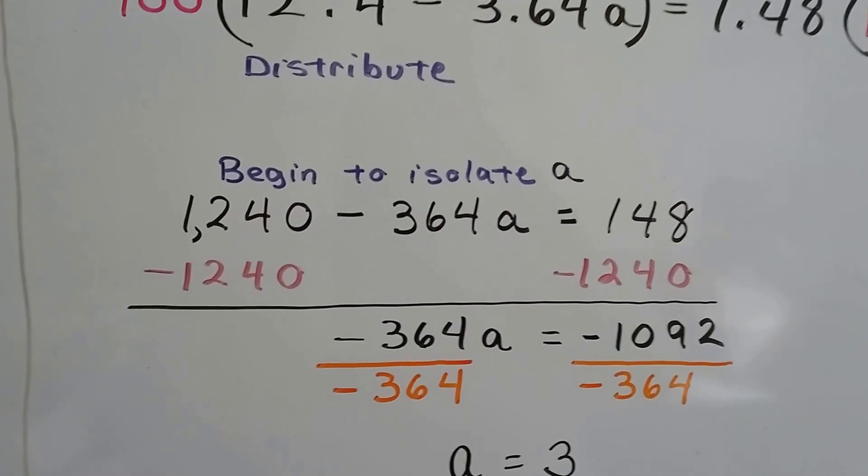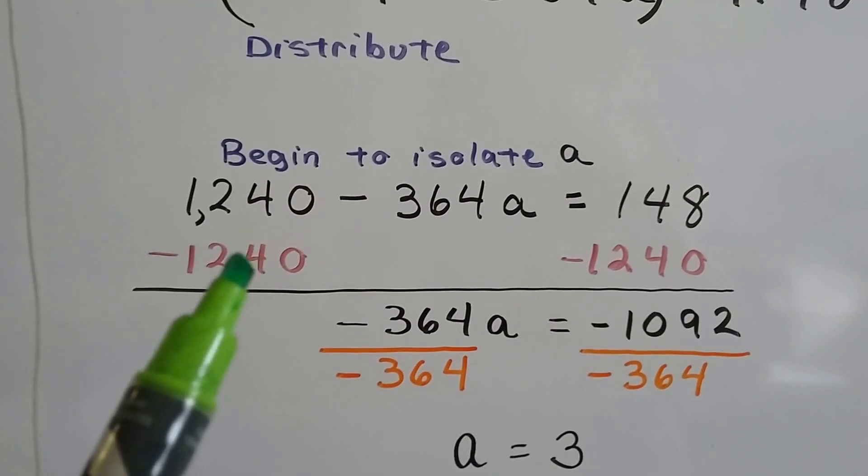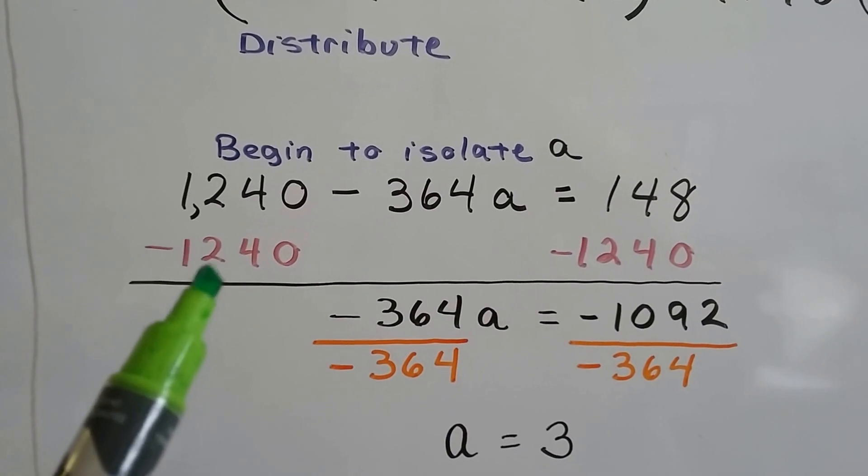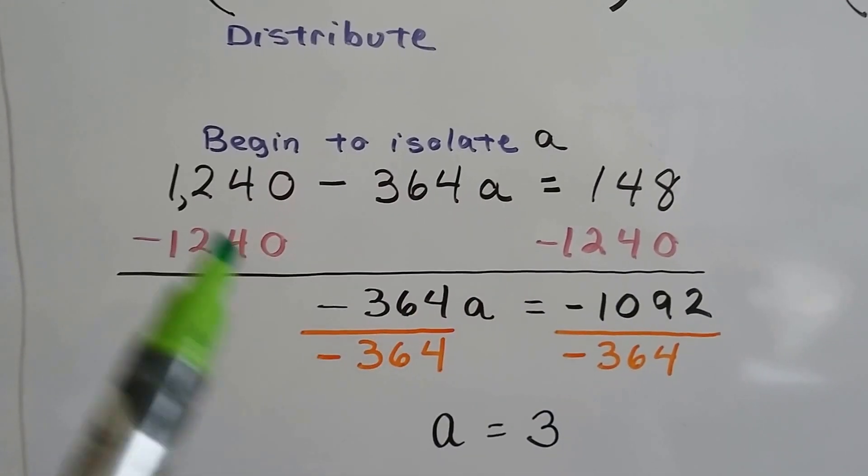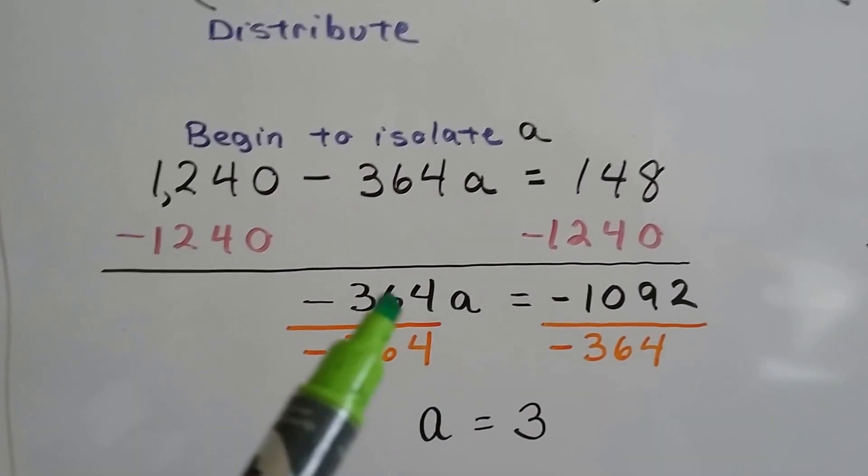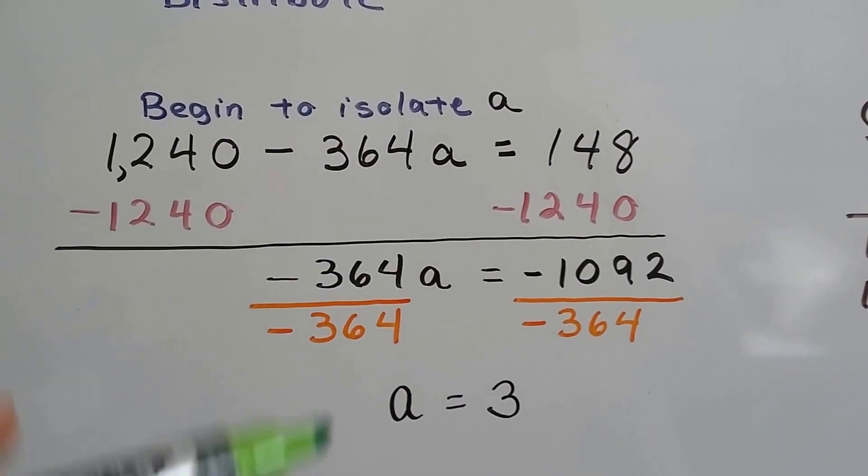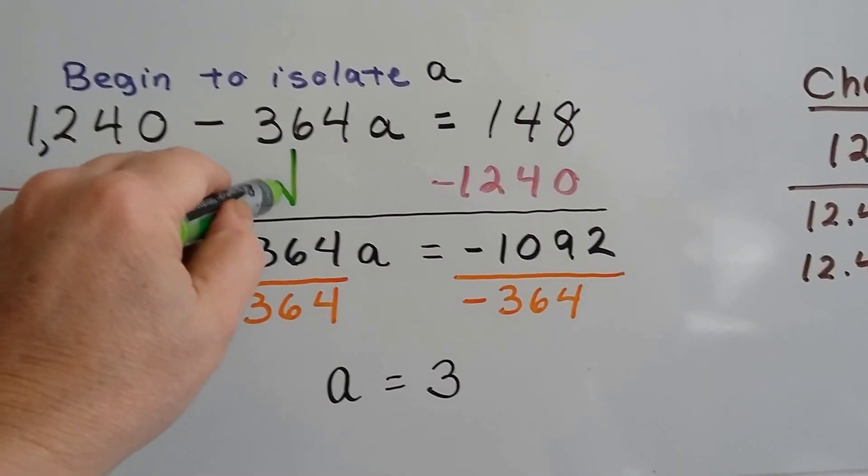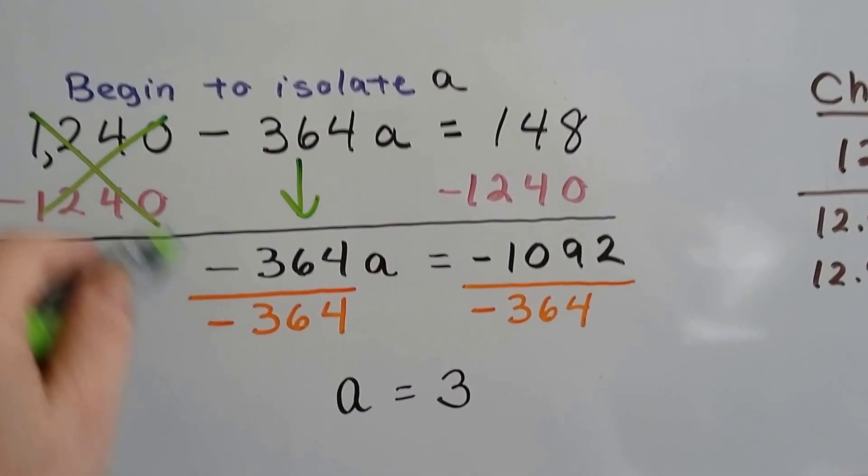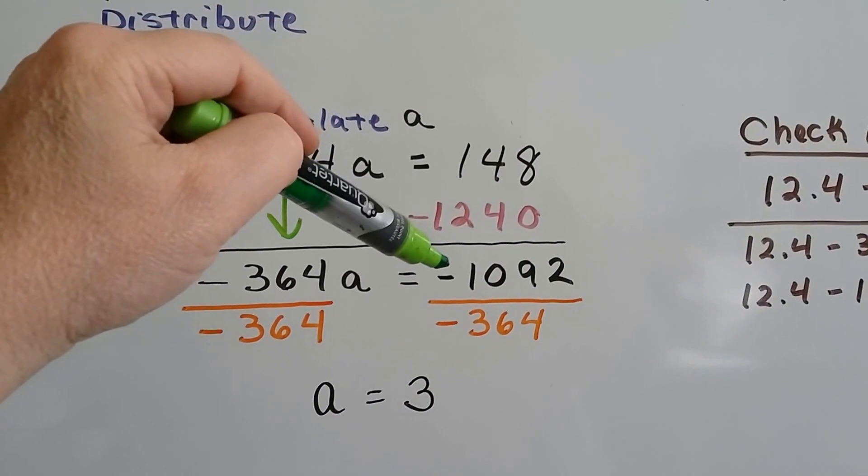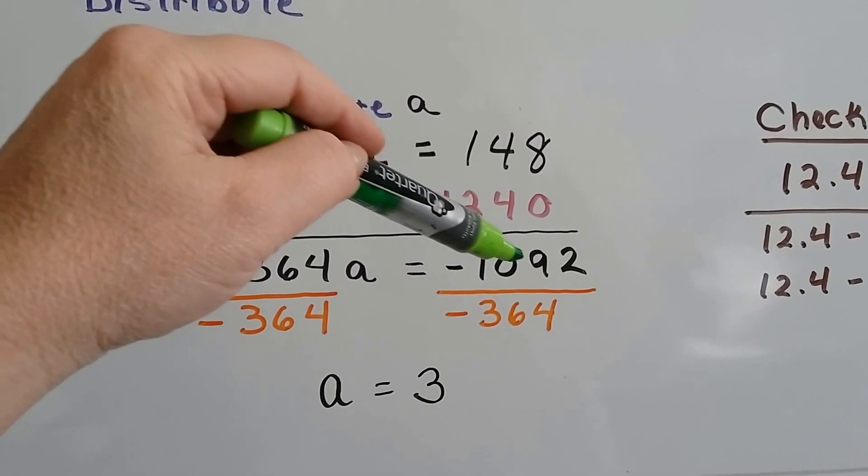We need to isolate this a. So we can start by getting rid of the terms on this side of the equation, so we subtract 1240 from each side. That's going to give us a negative 364a that drops down. This made a zero pair, and 148 minus 1240 is a negative 1092.